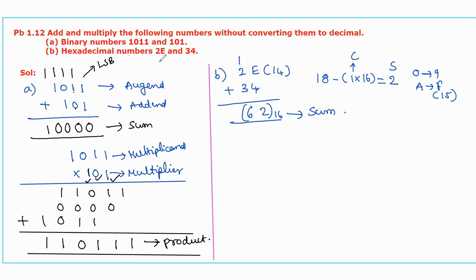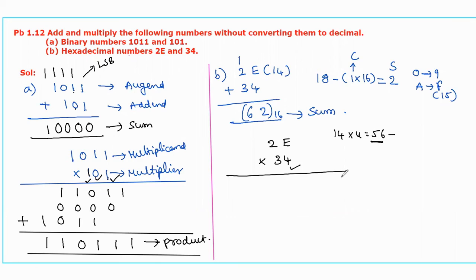Now let us move to the multiplication of two hexadecimal numbers: 2E multiplied by 34. Starting from the LSB of the multiplier: multiply 4 by E, where E means 14, so 14×4=56. This is not a hexadecimal digit, so we convert it: 3×16=48, and 56−48=8 is the difference. So 8 is the partial product and 3 is the carry forwarded to the next position. Then multiply 4 by 2: 4×2=8, plus carry 3 equals 11. Since 11 is a hexadecimal digit, its equivalent is B, so we write B.